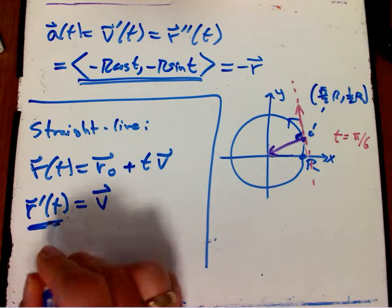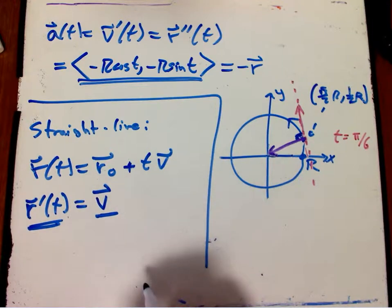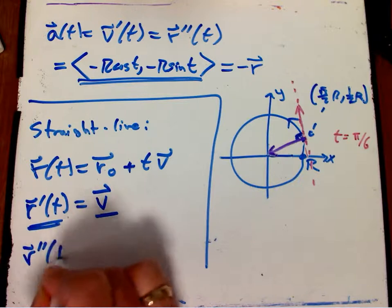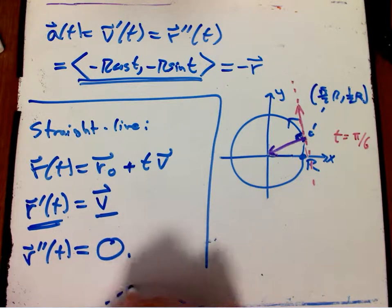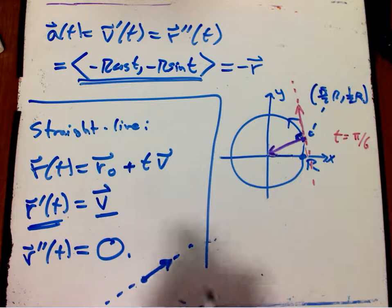This is exactly what it should be. This was supposed to be constant velocity motion along a straight line. And indeed the velocity, which usually is a function of t, is just this constant that I put in to start the process. r double prime of t, of course, is the derivative of a constant, which is zero. And that's exactly what's supposed to be true for straight line motion with constant velocity.